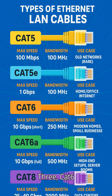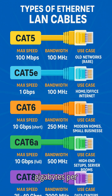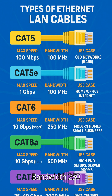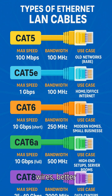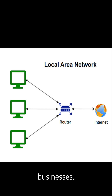3. CAT 6: Speed up to 10 Gbps for shorter distances (55 meters), Bandwidth 250 MHz. Features thicker copper wires and better shielding. Popular for modern homes and small businesses.